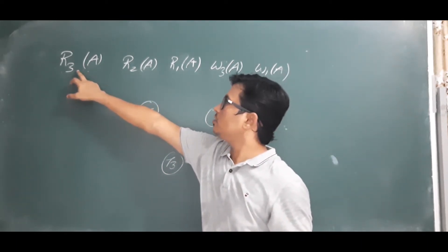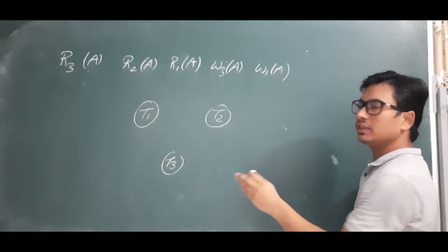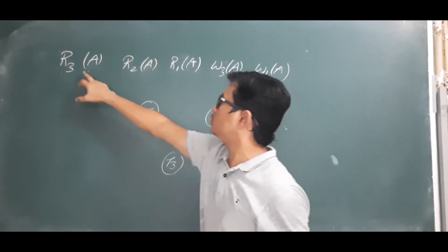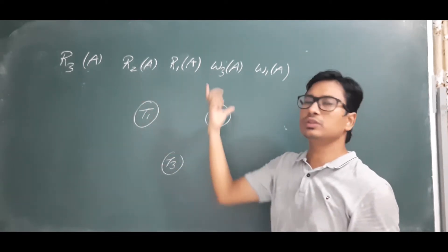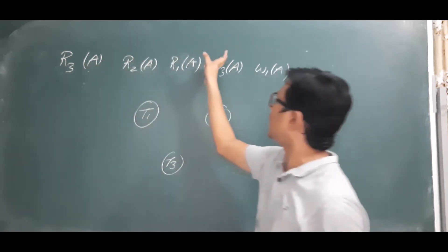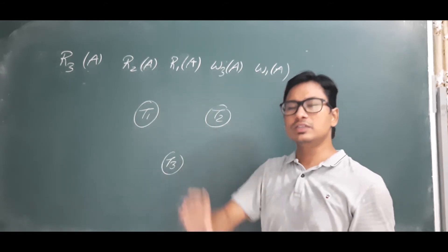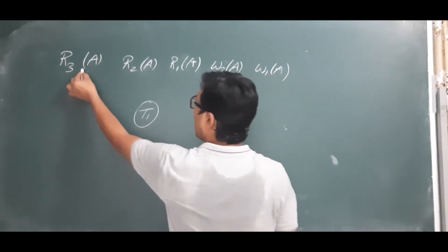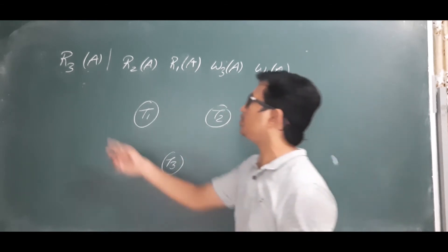For R3(a), you need to check what operations come after it — but you should not check within the same transaction. You should not say R3(a) and W3(a) is a conflict with itself. We should always compare with operations from other transactions. So R3(a) and R2(a) — is that a conflict? No, both are read operations, so it is not a conflict.